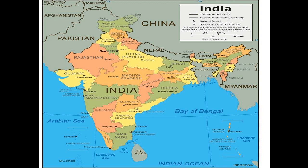Here in this map, you can see on the top right-hand side there is a box in which it is written India. Under that you can see there are some keys given: international boundary, state or union territory boundary, national capital denoted by a star, and state or union territory capital denoted by a dot. These are the keys.